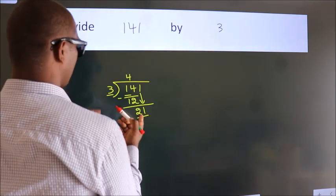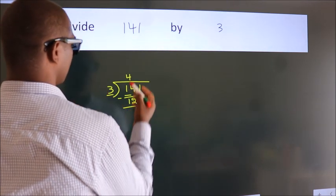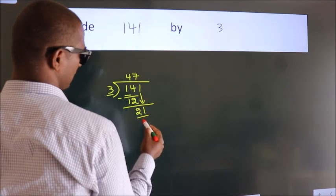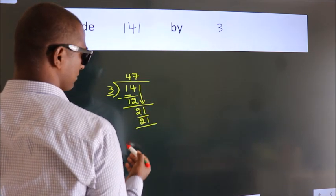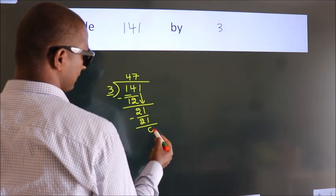When do we get 21 in 3 table? 3 sevens 21. Now we subtract. We get 0.